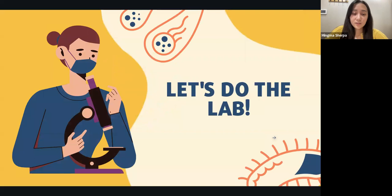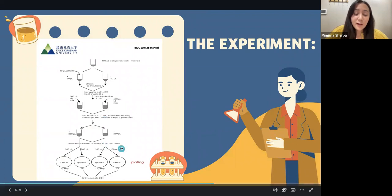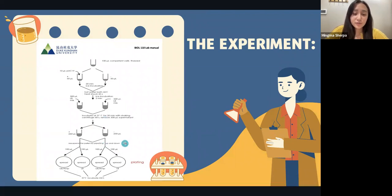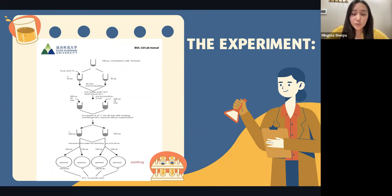Now let's move on to the lab experiment. This diagram shows a brief overview of the experiment. Firstly, 100 microliters of competent cells are used. The reason for using competent cells is because they can easily take in foreign DNA. Then we pour the cell suspension into two different tubes with 50 microliters in each, and then we add the PUC-19 plasmid to one of them and incubate both tubes in ice for 20 minutes.